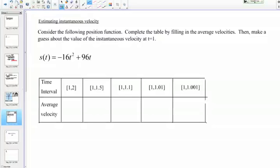Let's do an example about estimating the instantaneous velocity. Here are the directions. Consider the following position function. Complete the table by filling in the average velocities, then make a guess about the value of the instantaneous velocity at time equals 1.